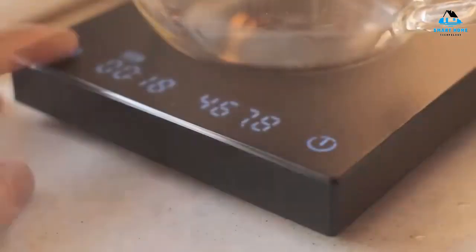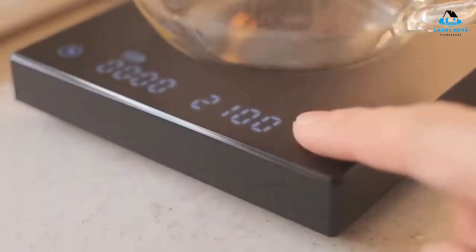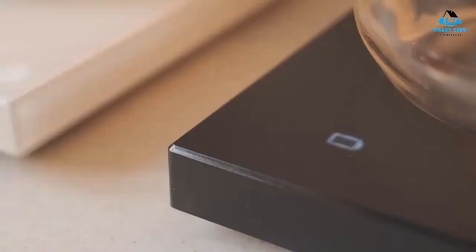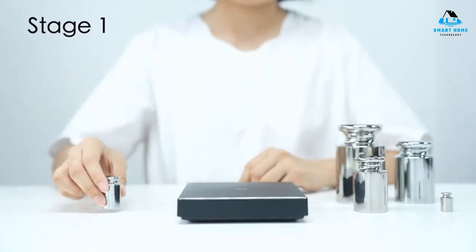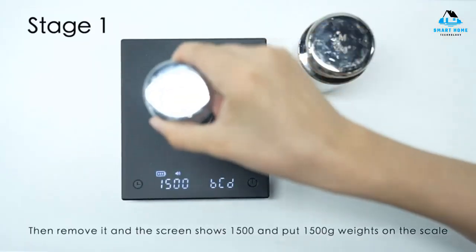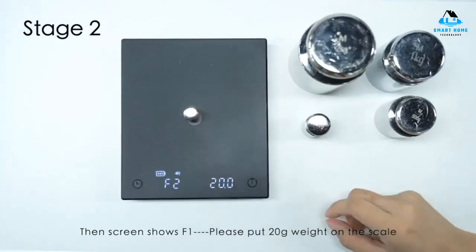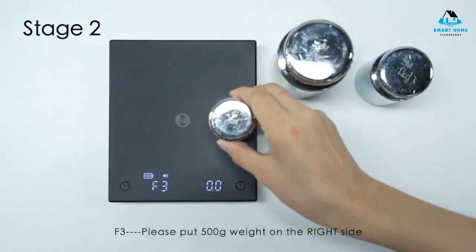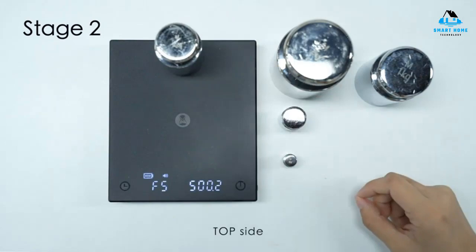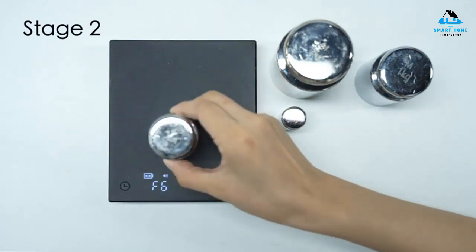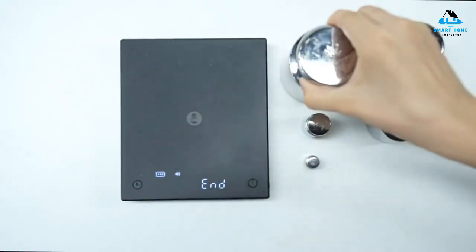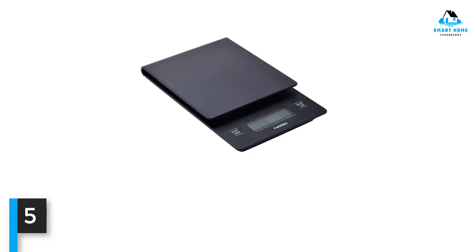Besides accurately weighing your java, this electronic scale includes an integrated timer that allows you to take more control of your brew. There is also an automatic timing function that starts when the scale senses a change in weight. Additionally, it has an auto-off function that engages after three minutes of inactivity. This scale features a built-in lithium rechargeable battery, which can last for up to 10 hours, and there is a Type-C USB port located on the scale to charge as needed.